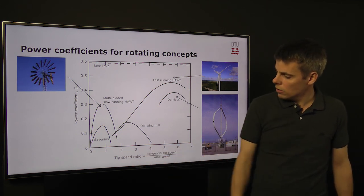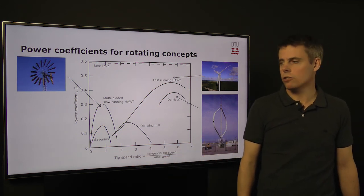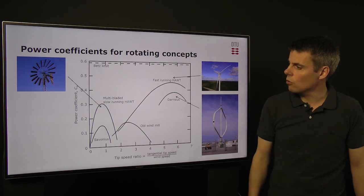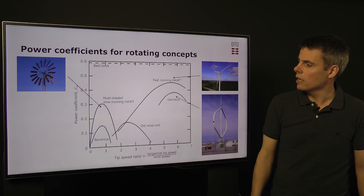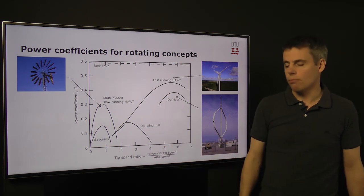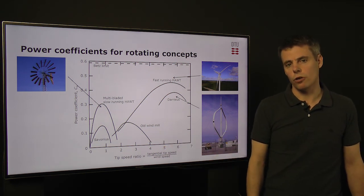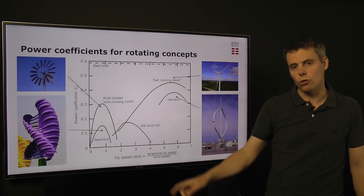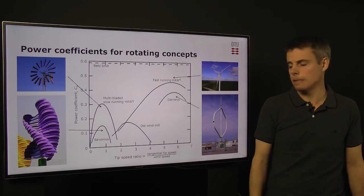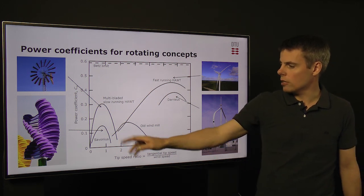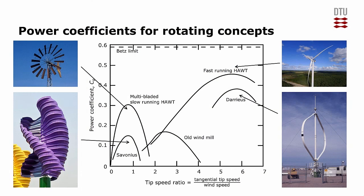In this low range of the tip speed ratio, we find the multi-bladed motors that can produce a high torque but not run very fast. It has a power coefficient up to 30% and is therefore also more efficient than the drag-based machines which also have low tip speed ratios, like the Savonius turbines between 10 and 15% efficiency.